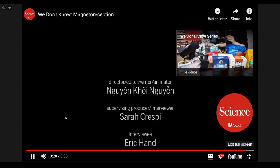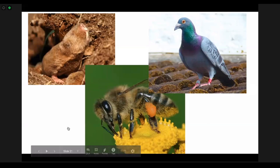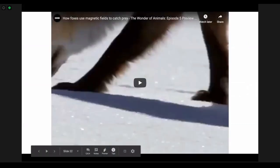So some other animals that use magnetoreception: the Zambian mole rat, the honeybee, and the homing pigeon.